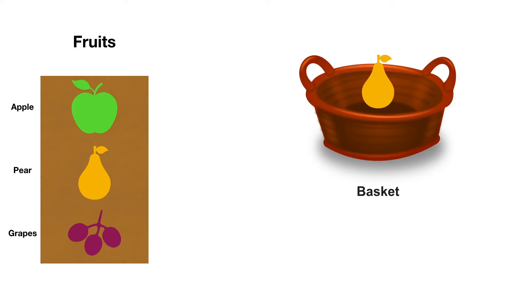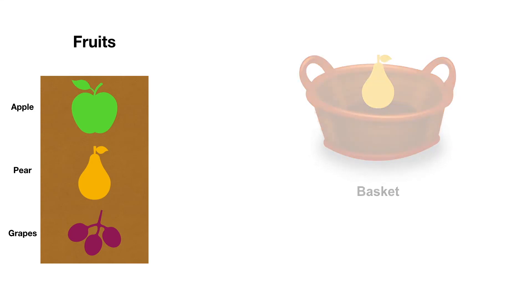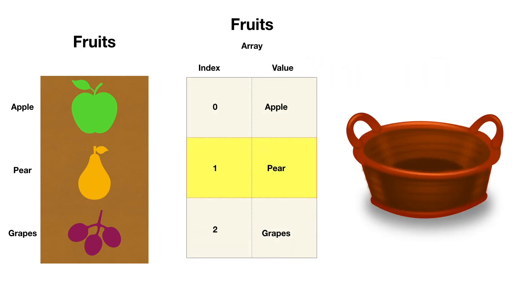We have the fruits — we have the apples, pear, grapes. In the array context, we will try it as a fruit. Each value will correspond to an index.